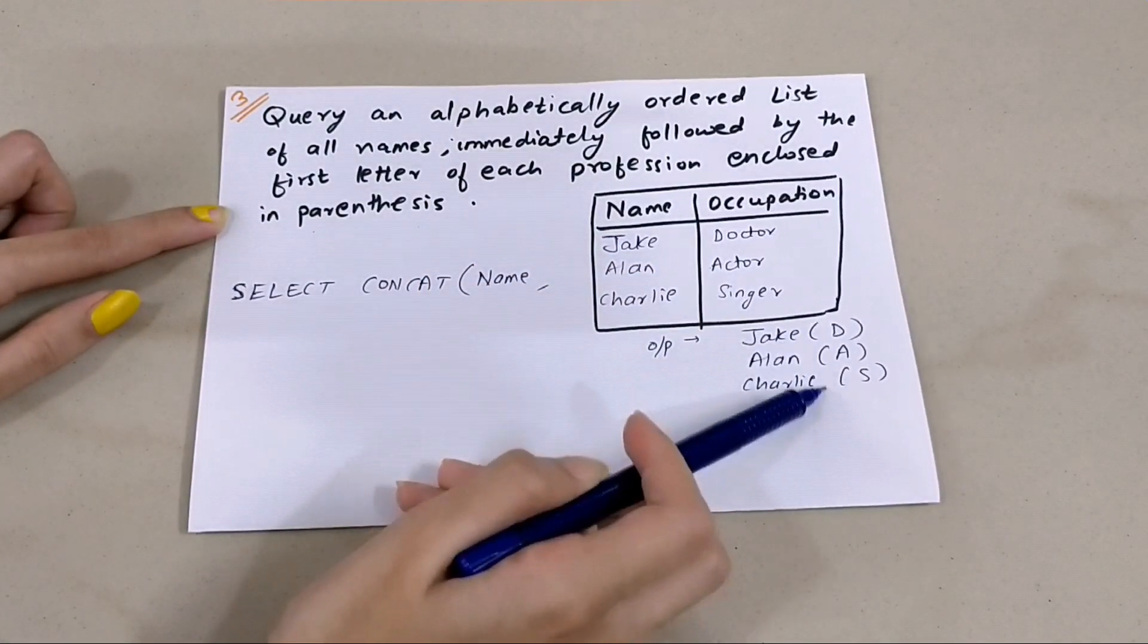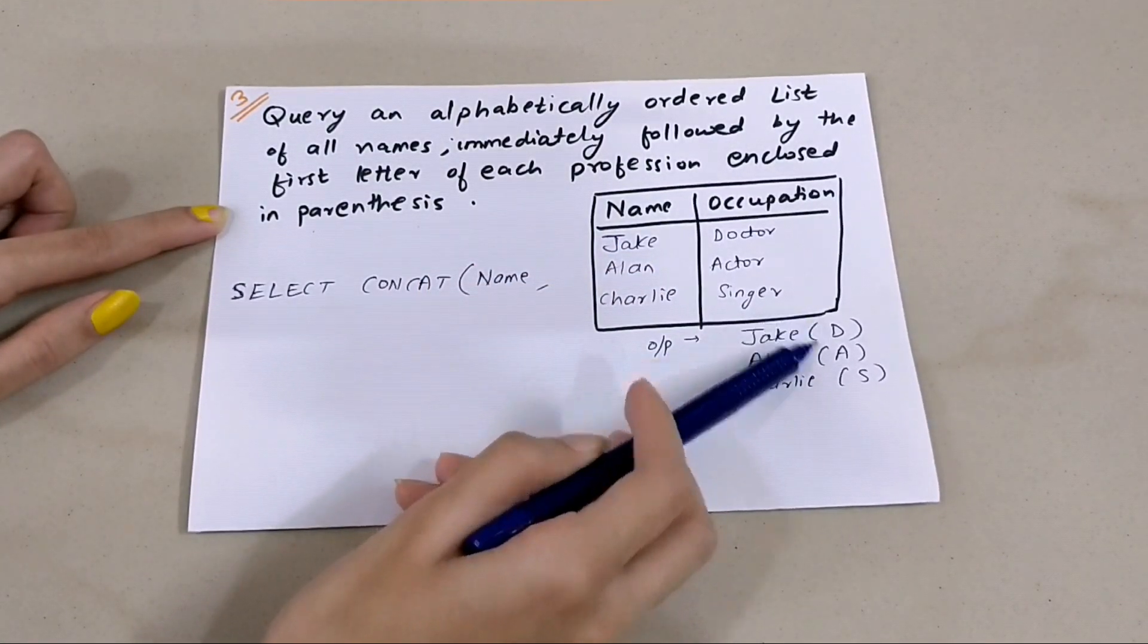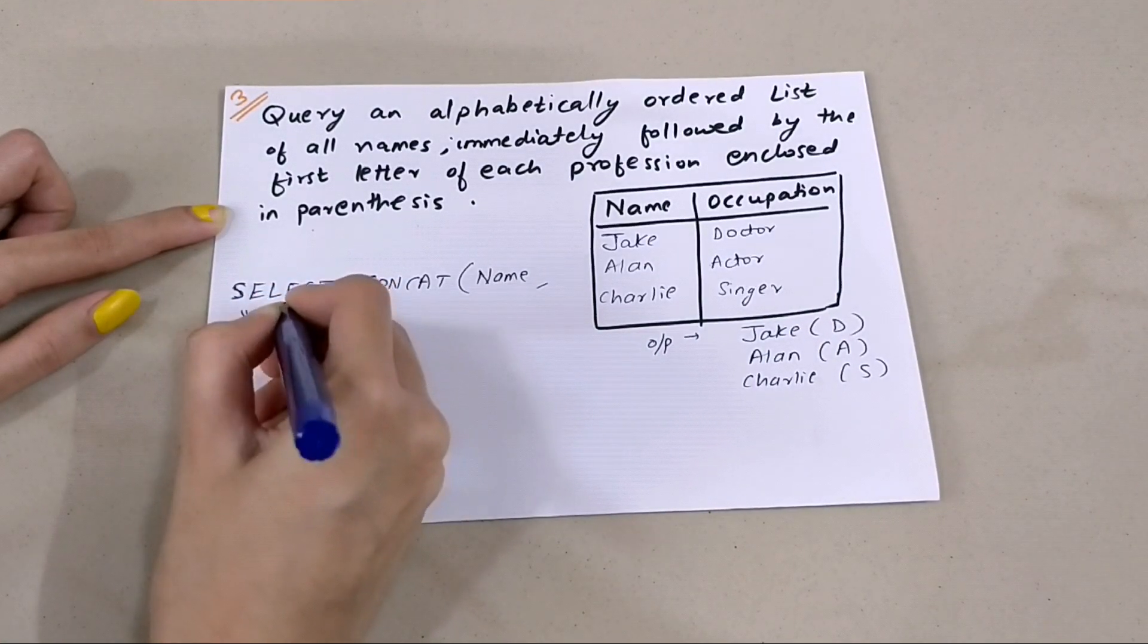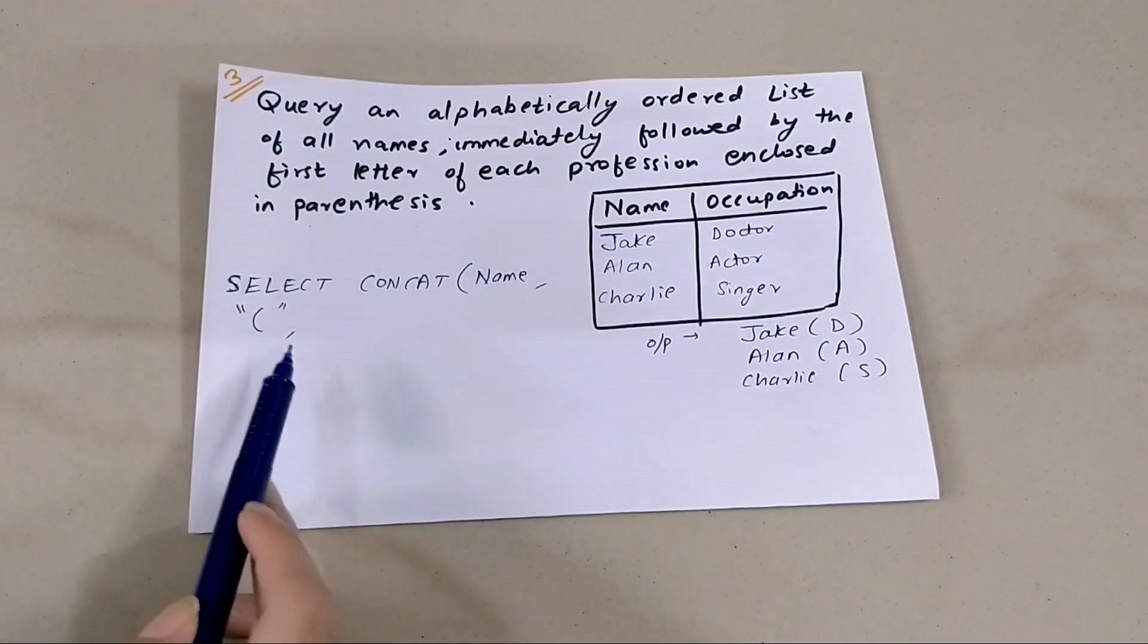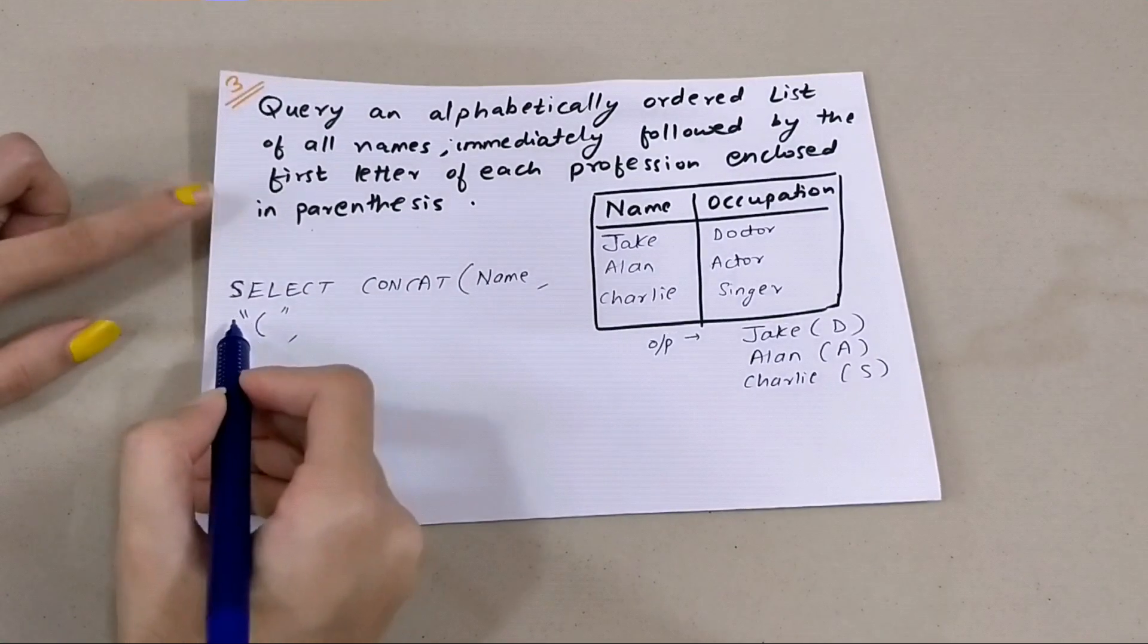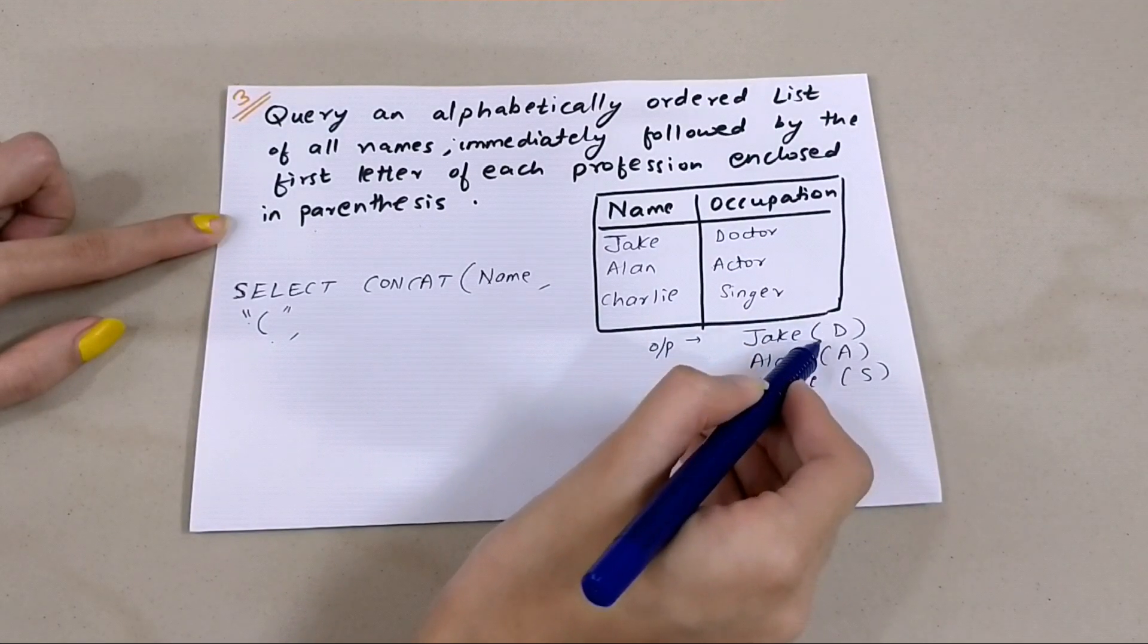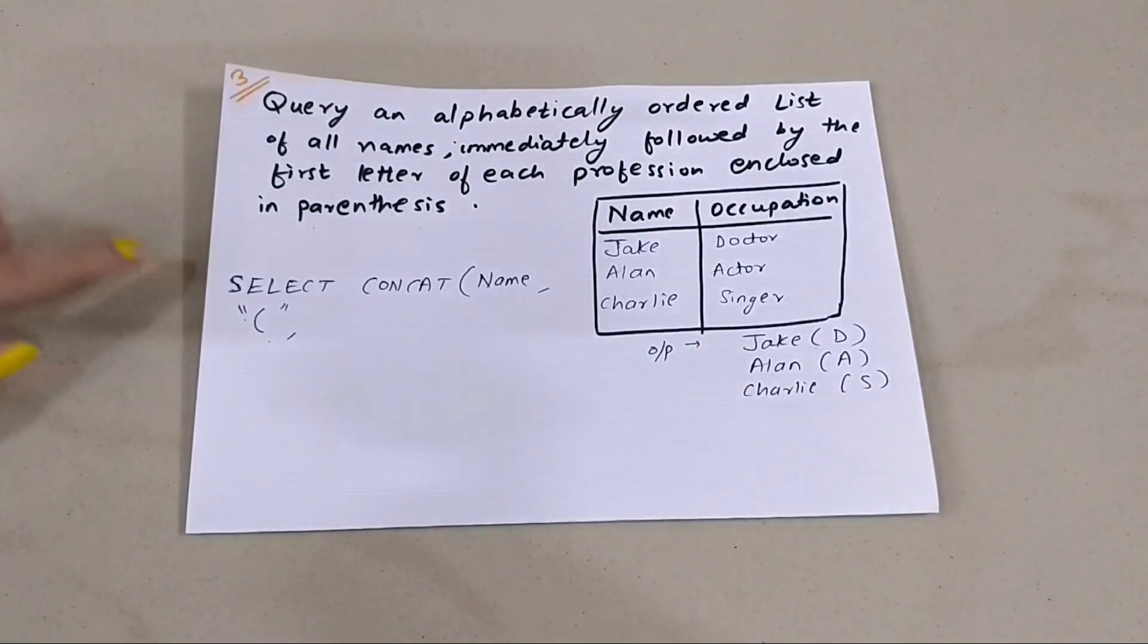Then the next thing is not a space, it's directly a parenthesis - the left parenthesis. So we are going to write it in quotes. Whenever you want to print a literal value, we put it in quotes. So the left parenthesis will be printed, then we want to print the first letter of the occupation.